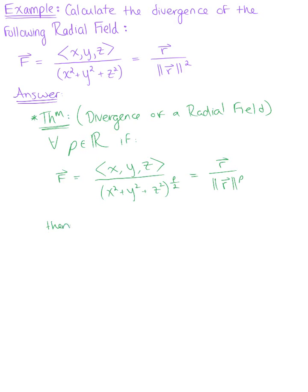Then the divergence can be computed as follows. So we say that the divergence of the vector field F is equal to 3 minus that real number P all over the magnitude of R raised to the P power.